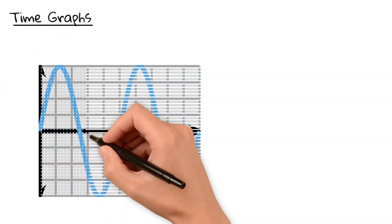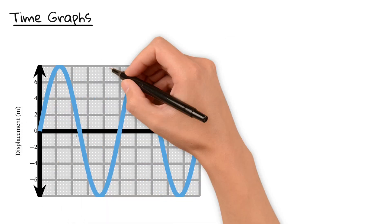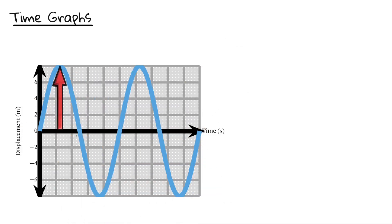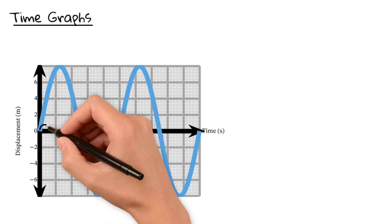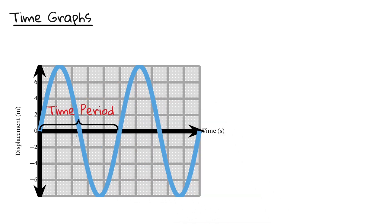To visualize this, we can draw a graph showing the displacement of the water molecule against time. This wave-like pattern lets us measure the amplitude and something called the time period. That's the time it takes for one full up and down movement or one complete oscillation.